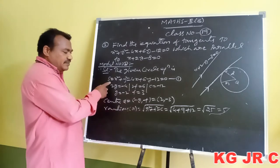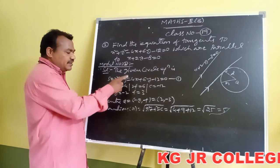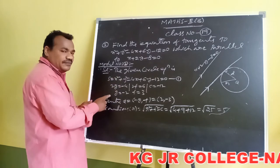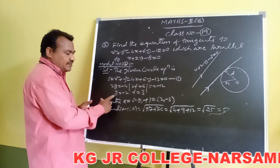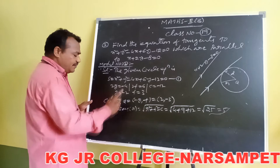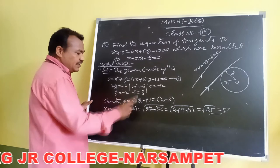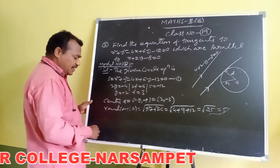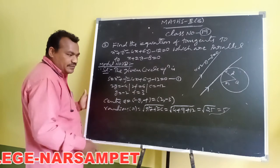This is the circle. We are comparing the circle with the general form, then we are getting the values g, f, and the center coordinates as 2 comma minus 3, and here the radius is equal to 5.